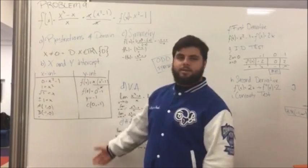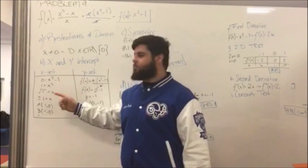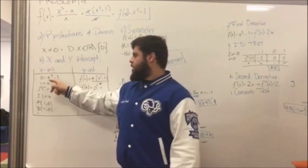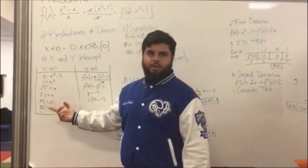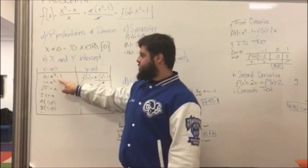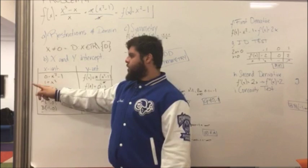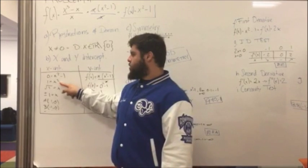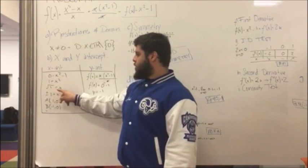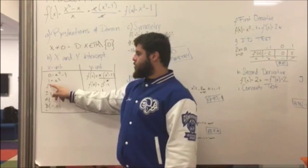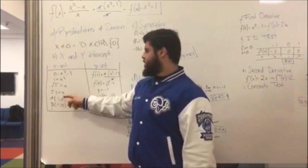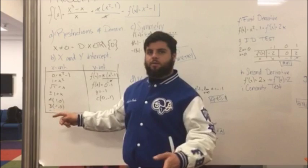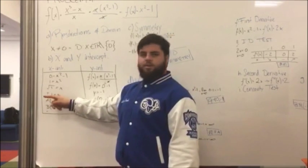Then we have to obtain the x and y intercepts. For the x intercept, we equal the function to zero and isolate x. We pass minus one to the other side as positive, and to eliminate the square we apply a square root. So x is equal to the square root of one, and since a square root gives two results, x equals plus or minus one.